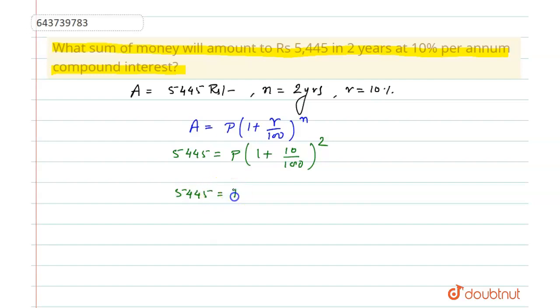equals P times (11 by 10) squared. So P will be equal to 5,445 into 10 by 11 squared. After solving this, we get P as 4,500 rupees, and this is the sum of money that we need to calculate, and this will be our answer. Thank you.